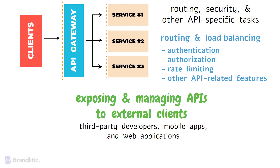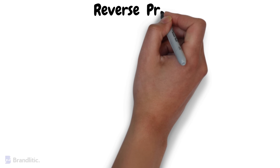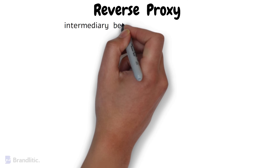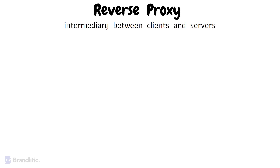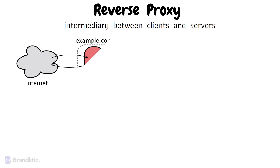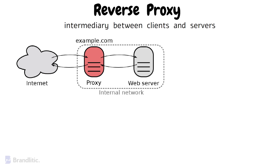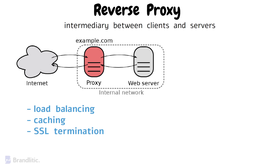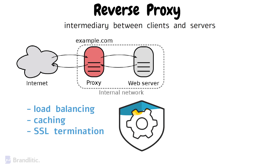In essence, a Reverse Proxy's purpose is to act as an intermediary between clients and servers, forwarding client requests to appropriate backend servers and returning responses to clients. In terms of functionality, they primarily focus on load balancing, caching, SSL termination, and serving as a shield to protect backend servers from direct exposure to the internet.